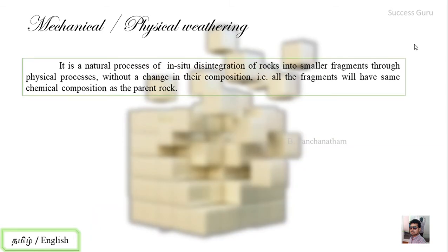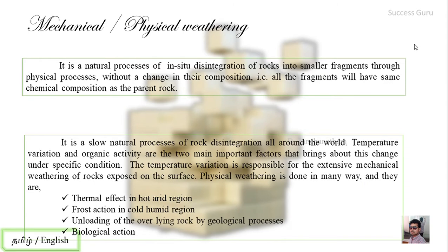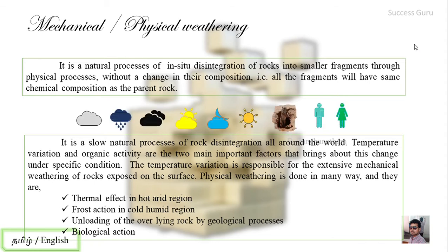Mechanical and physical weathering is a natural process of in-situ disintegration of rocks into small fragments through a physical process without change in the composition. This is a slow natural process of rock disintegration all around the world. The main factors are temperature variation and organic activity.